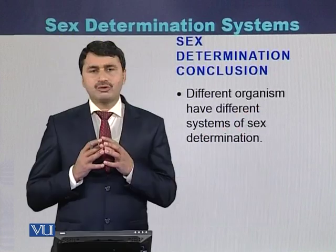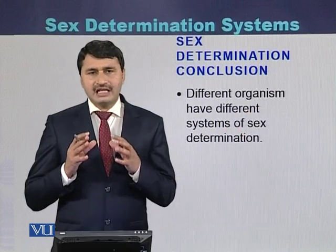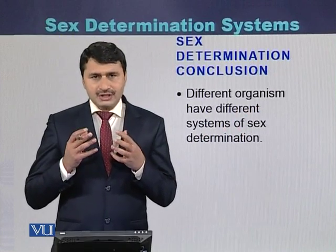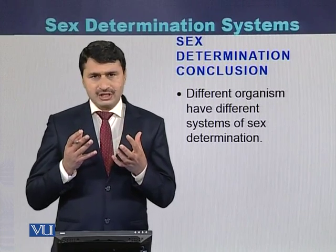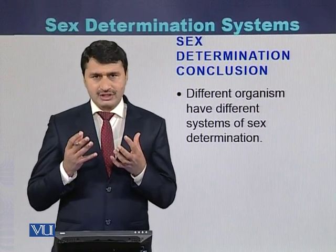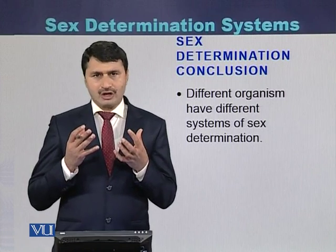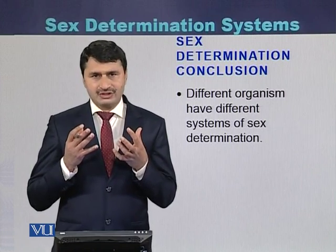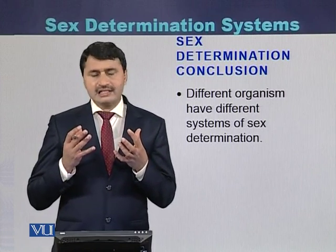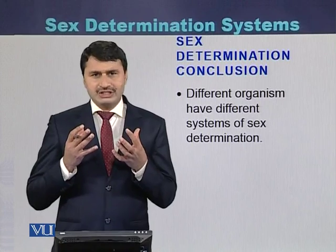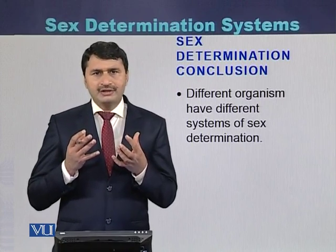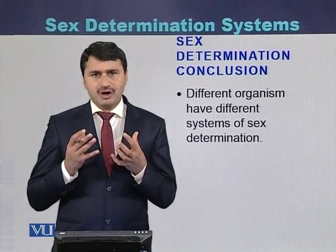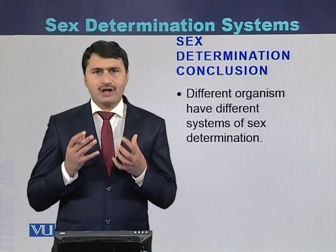In conclusion, there are different systems of sex determination: the XY system, the X0 system, the ZW system, and the haploid and diploid system. These are all examples of sex determination in different organisms.